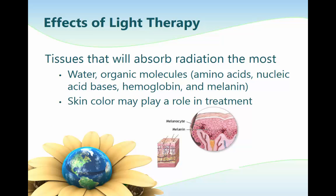Laser and non-laser devices vary in depth of penetration, type of tissue affected, and the type of molecules affected. Tissues that absorb radiation the most include water, organic molecules such as amino acids, nucleic acid bases, hemoglobin, and melanin. Skin color may play an important role in treatment, as melanin — a pigment contributing to skin coloring — tends to absorb light in the visible spectrum well. Patients with darker skin may absorb more light in the cutaneous layers, preventing penetration to deeper tissues, and light in the near-ultraviolet range can trigger melanin production, darkening the skin.